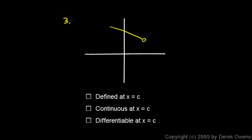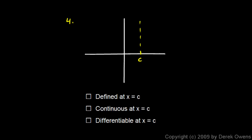Number three: draw a function with a hole at point C, but there is a value — a dot — right there. Is the function defined at C? Yes, it has a y-value at whatever the height of that dot is. Is it continuous at C? No. And so is it differentiable at C? No. For number four, point C is at a vertical asymptote. Is it defined at C? No. So it's not continuous and not differentiable.